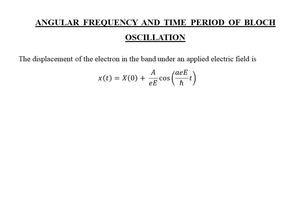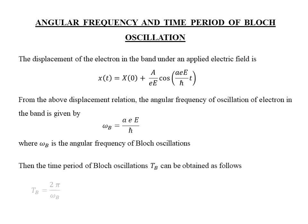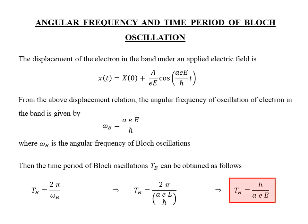The only time dependence in the displacement of the electron is on the cosine function, which is an oscillatory function in time t. So the angular frequency of oscillation of the electron in the band is identified from this expression and denoted by omega_b, where the subscript b means this is the Bloch oscillation frequency. Once we have the angular frequency of oscillation, the time period can be obtained by dividing 2-pi by omega_b. Plugging the obtained expression for omega_b and with a little simplification, we get the time period of Bloch oscillation. It is important to note that in the time period expression, the numerator is h — the Planck's constant — and not h-cross, which we had been using throughout this derivation. With this, I am done with the mathematics of Bloch oscillations.